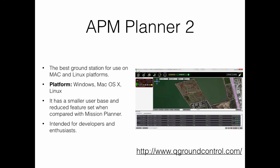APM Planner 2 is also a ground station software that is very similar to MissionPlanner, but it is available for both macOS and Linux environments in addition to Windows. It is considered the best ground station for Mac and Ubuntu operating systems. APM Planner 2 provides almost the same functionalities as MissionPlanner, including analyzing log files.